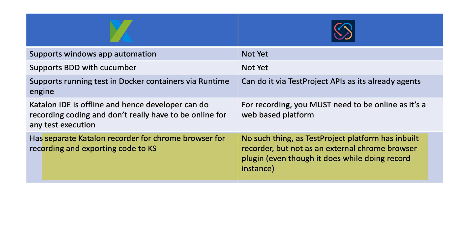Katalon Studio has a separate Katalon Recorder for Chrome browsers, and you can export the recorded code to Katalon Studio for further extension. Whereas in Test Project no such thing exists, since Test Project itself is a web-based application. Test Project does install a plugin within the Chrome browser during recording, but it is not available as a separate external Chrome browser plugin for you to install and use independently. These are some of the great features Katalon Studio has compared to Test Project.